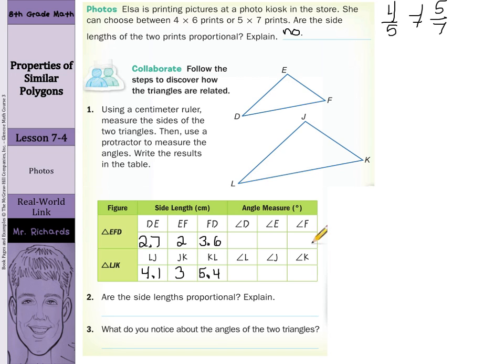Now for our angle measures, D I measured at 33 degrees, E I measured at 100, F at 47. L was just like D at 33 degrees, J was like E at 100 degrees, and K was like F at 47 degrees.